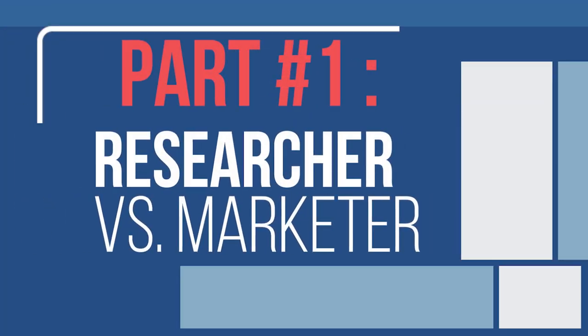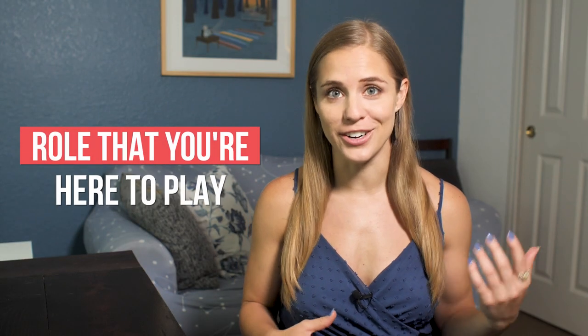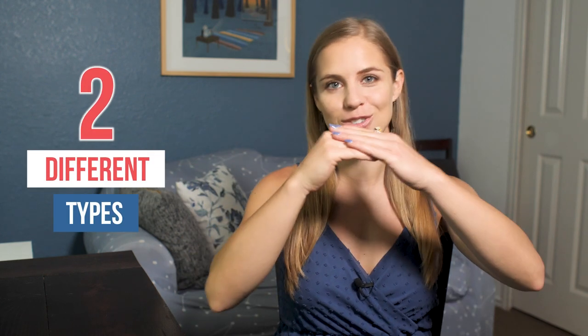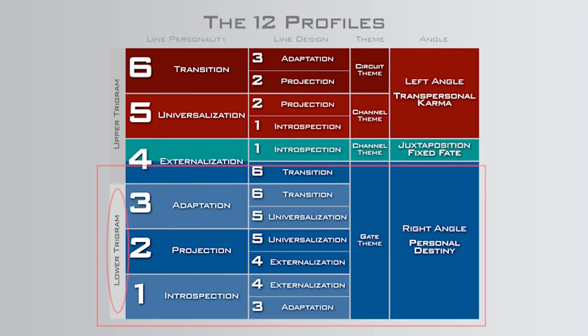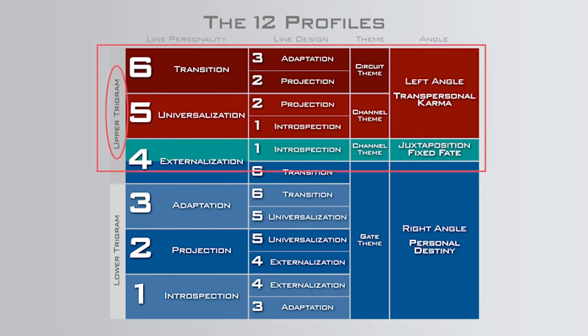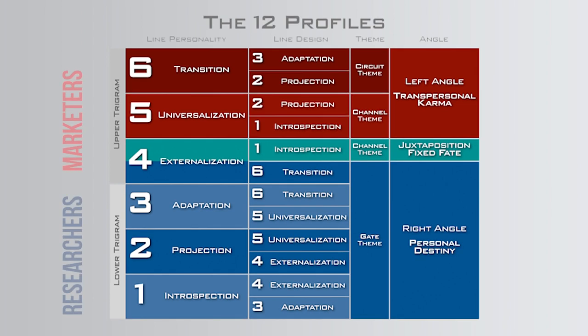Part one: researcher versus marketer. Your profile in human design is the role that you're here to play, and it's broken into two different categories. You have your lower trigram profiles — individuals here for personal destiny who find, learn, investigate, and learn through trial and error, mostly to determine things for themselves. Then the upper trigram is individuals who will learn something but immediately take it out and share it with others — the transpersonal side. Lower trigram individuals are the researchers of the world, collecting information, while upper trigram individuals take it out and market it.